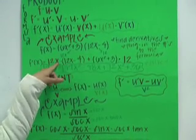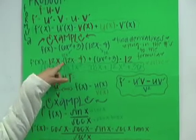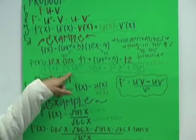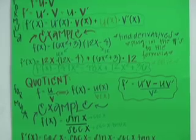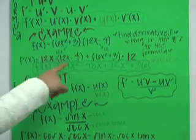So you have to distribute the 12 to this, and then you get 144x squared minus 48x plus 72x squared plus 36. And that would be your final answer when you multiply everything out.